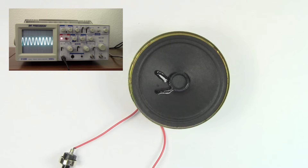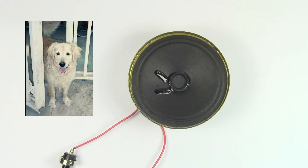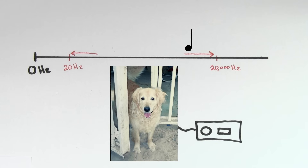For instance, this speaker is still playing a note, but we can't hear it right now. Dogs could hear this note though. Dogs can hear frequencies up to at least 40,000 hertz.